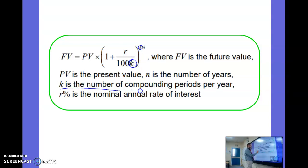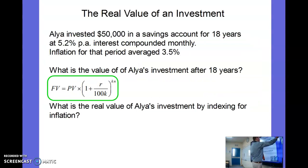For that we're going to need the full compound interest formula where we bring in this K, and that K is the number of compounding periods per year. So we're going to substitute values into this formula. We're starting with our present value of fifty thousand, 5.2 is the interest rate, our compounding periods K are 12, and the number of years N is 18.